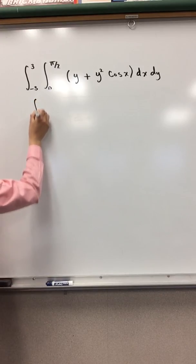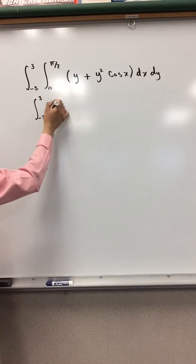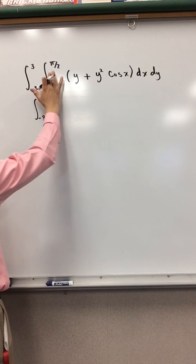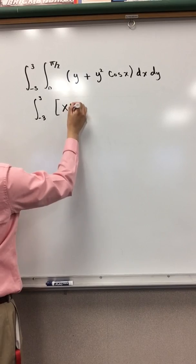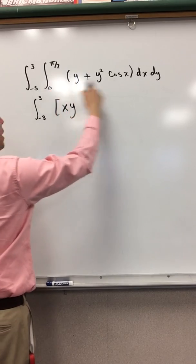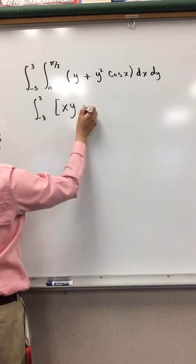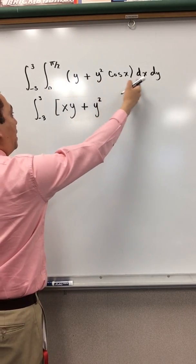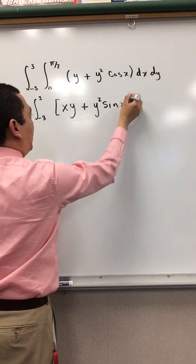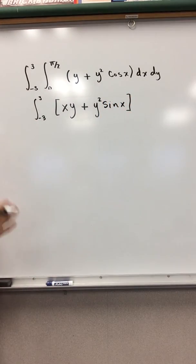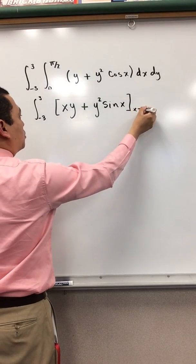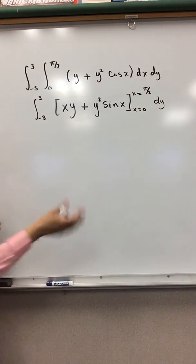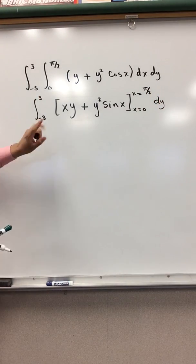I'm going to have the integral from negative 3 to 3. Inside the bracket, I have xy — from integrating y dx — plus y² sin x — from integrating y² cos x dx. I'll close the bracket and evaluate from x equals 0 to x equals π/2, and then the outside integral will be with respect to y.